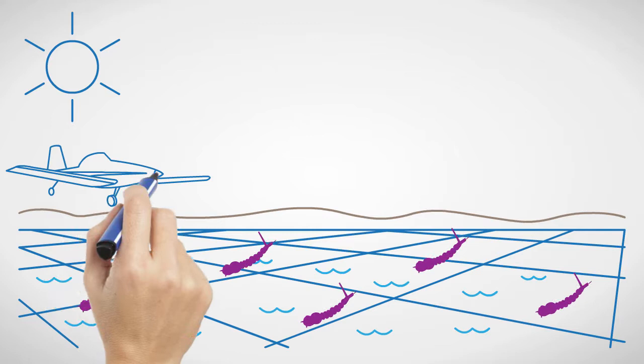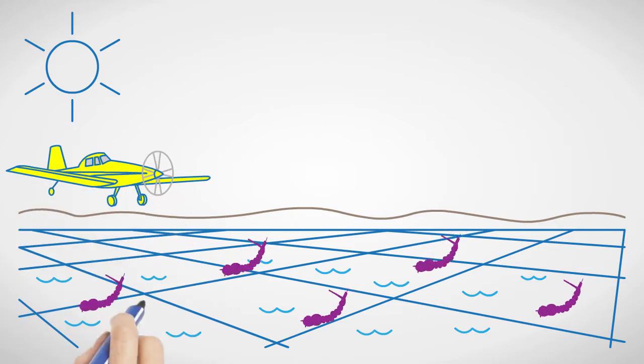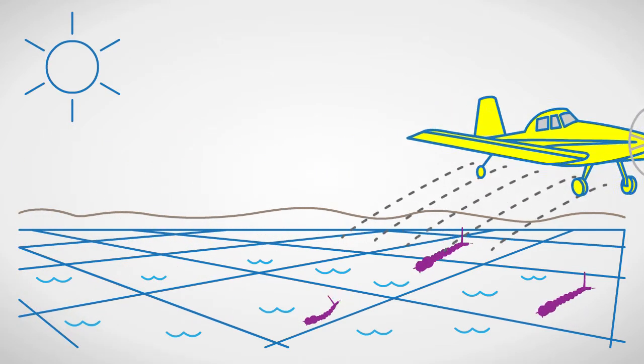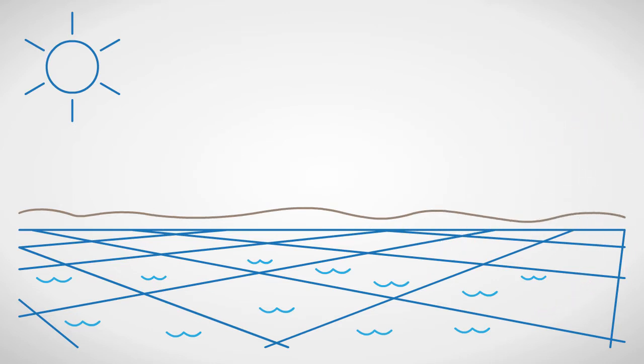Larvicide treatments use a small crop duster plane to apply a granular or a low-volume liquid larvicide directly to flooded irrigated fields during the day.